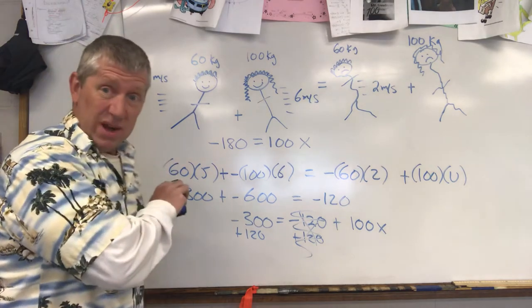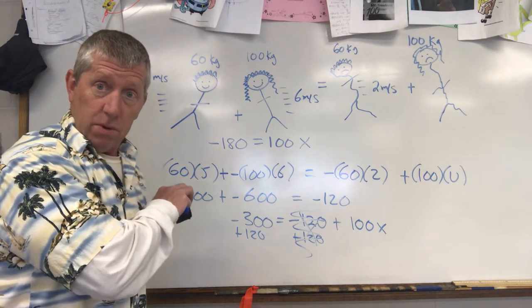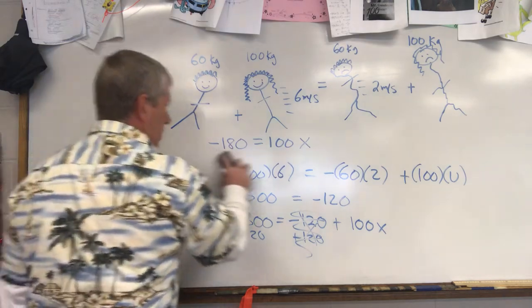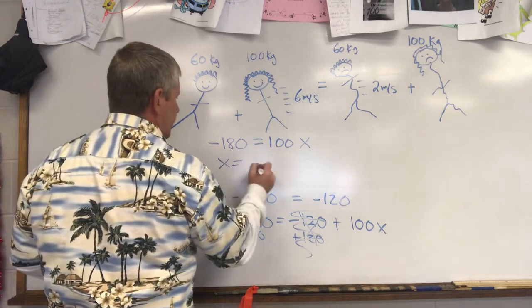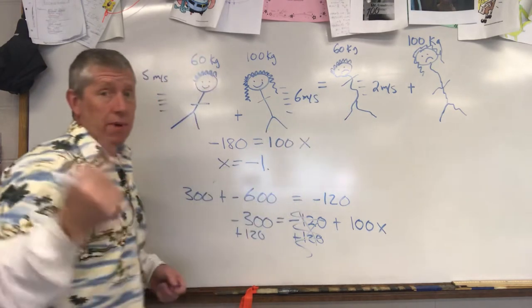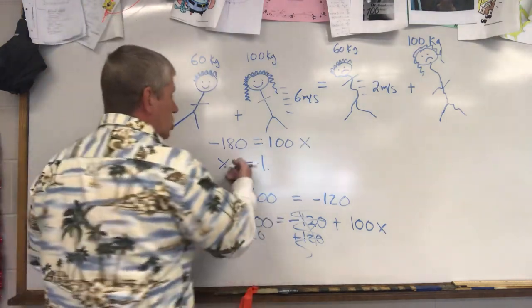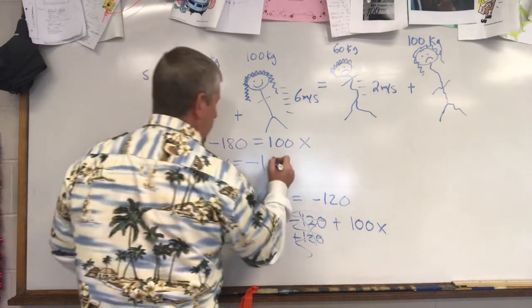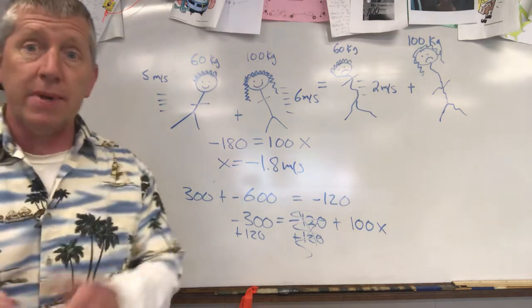So this is negative 180 equals, we got rid of this, 100X. We just solve for X now. I'll get rid of this now. Hopefully if you haven't wrote it down yet, write it down. If not you can always rewind. So X is equal to negative—don't forget that's a negative, that's important because we have to know the direction of Frank. So we know the velocity is negative 1.8 meters per second. So in other words the velocity's value is 1.8 meters per second. Negative, what does that mean?